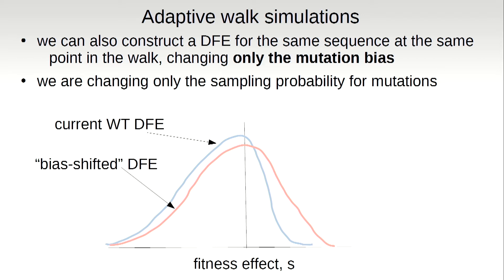The distribution of fitness effects would look something like: on one side, all the deleterious mutations; on the other side, all the beneficial mutations. The area under the curve on the beneficial side is the beneficial fraction of the DFE, and that's going to be important in what we go on to show. The neat thing we can also do is, using that same sequence, construct what the DFE would have been if we changed the bias — sampling the same mutations, same sequence, but with a different mutational bias. So we can ask: if this transition-biased organism suddenly became a transversion-biased organism, how would it affect the DFE? We have the current wild-type DFE and a bias-shifted DFE.